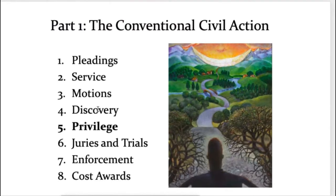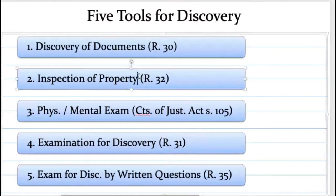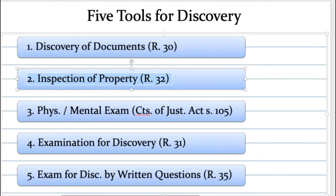Privilege is a limit on production but not a limit on disclosure, because you're still required to disclose the existence of all documents over which you claim privilege. The concept of privilege is not just about restricting the production of documents — it's also about restricting the production of evidence of all kinds. Privilege is a legitimate basis to refuse to answer a question at an examination for discovery and is a shield to discovery of any type.